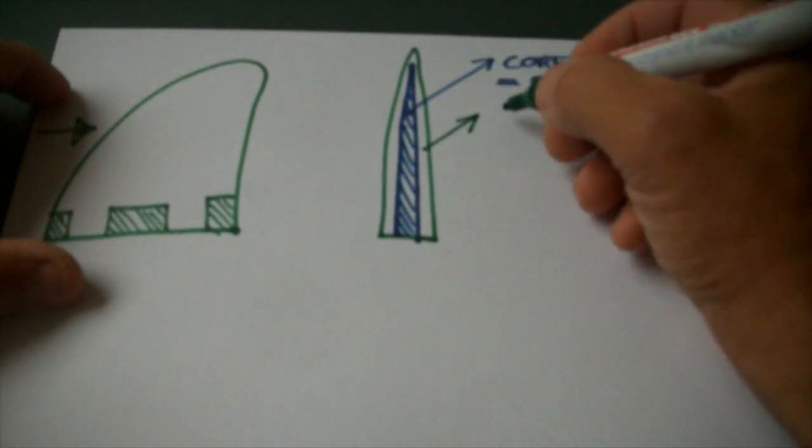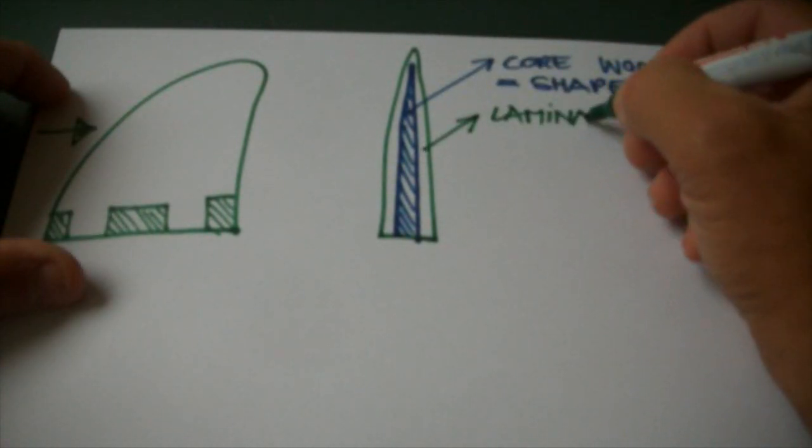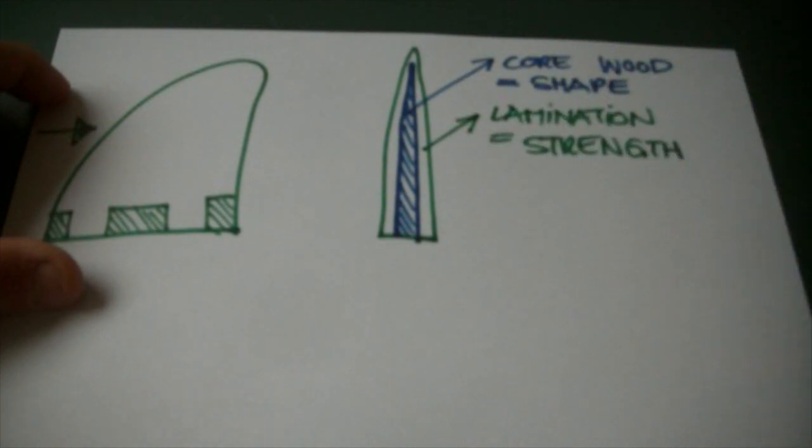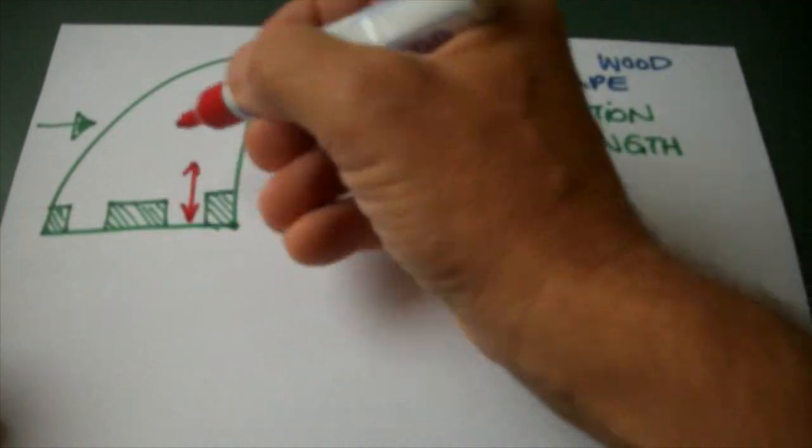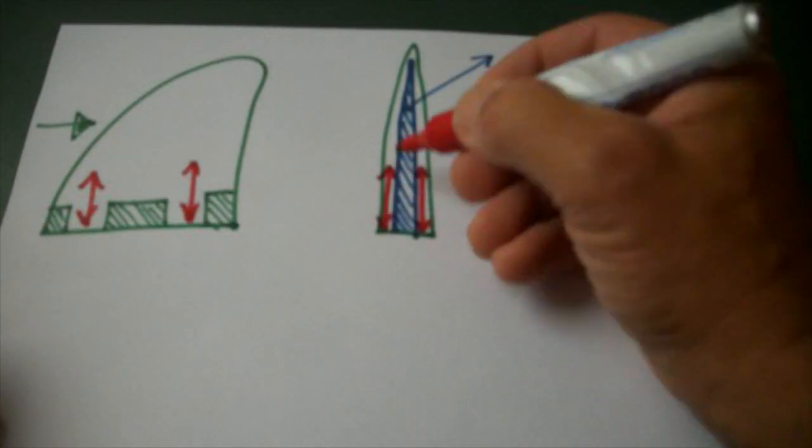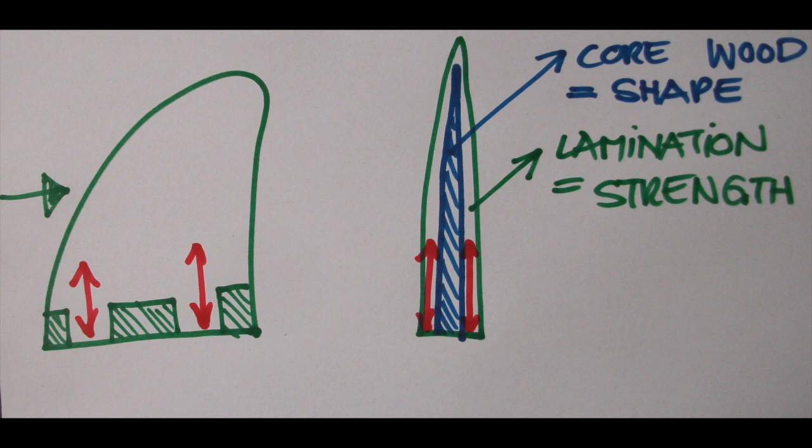The core gives me the shape of the fin. The lamination that goes all around the fin gives me the strength. This section of the fin must be the strongest because it gets a point load during surfing. It is most important that your laminated fibers go all the way through this section.